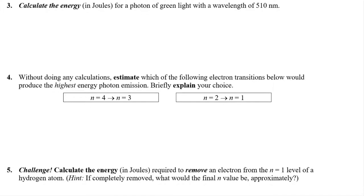Here's our first calculation. We need to recall that photons have a frequency and a wavelength. The frequency ν times the wavelength λ equals the speed of light c. The energy of a photon equals Planck's constant times frequency: E = hν. Since we're given the wavelength, we can rearrange to get E = hc/λ. That's a really important equation. So let's go ahead and calculate.